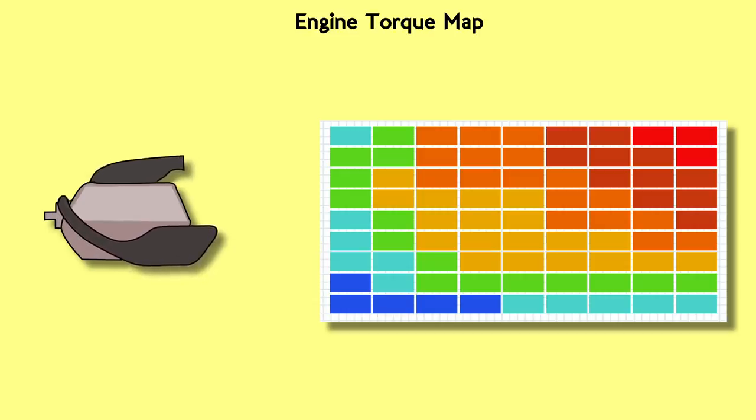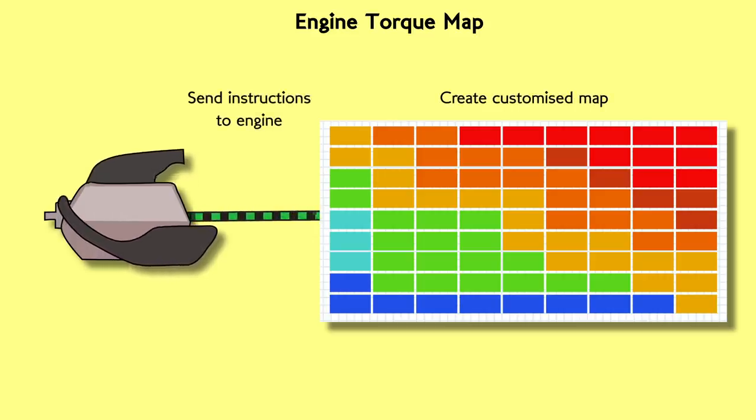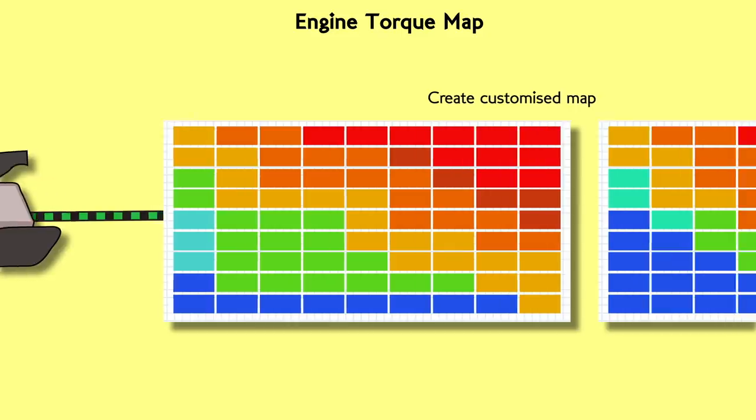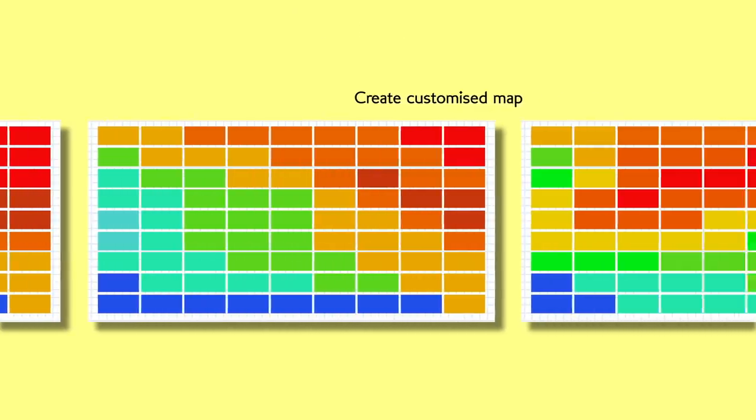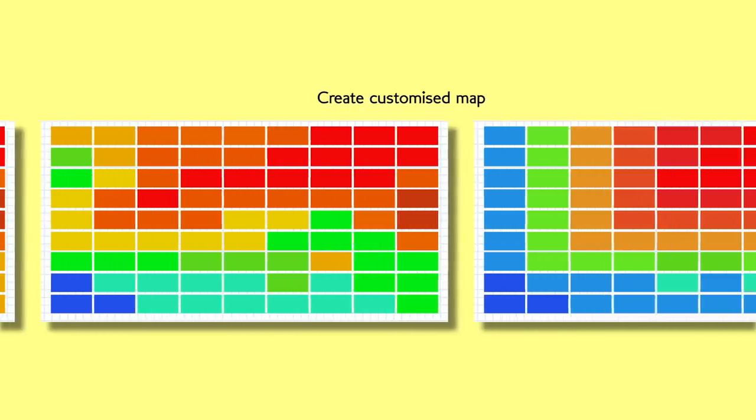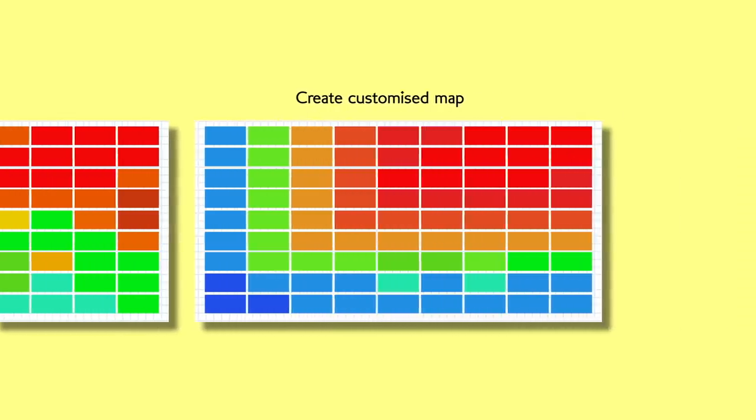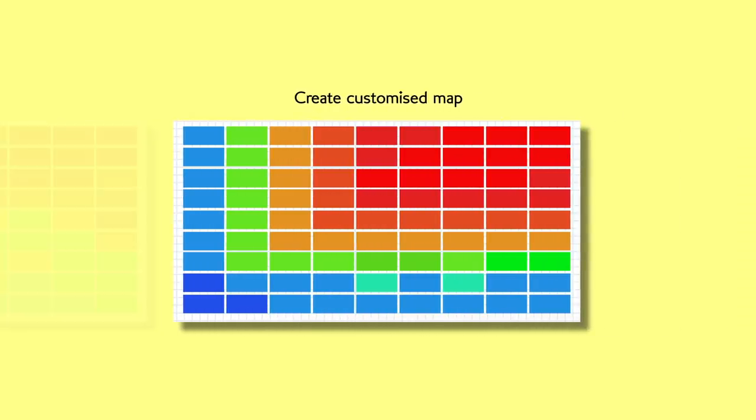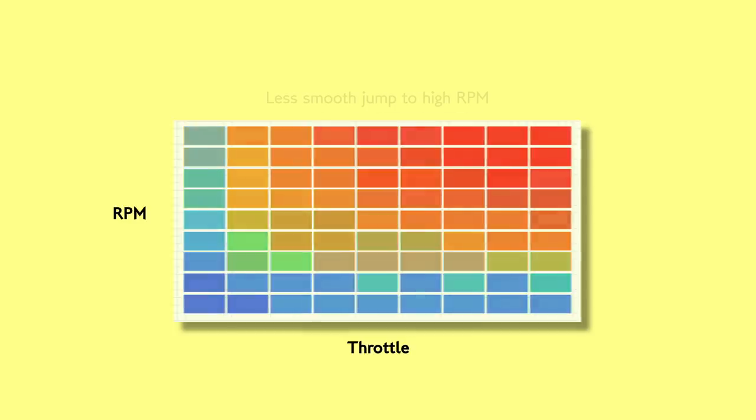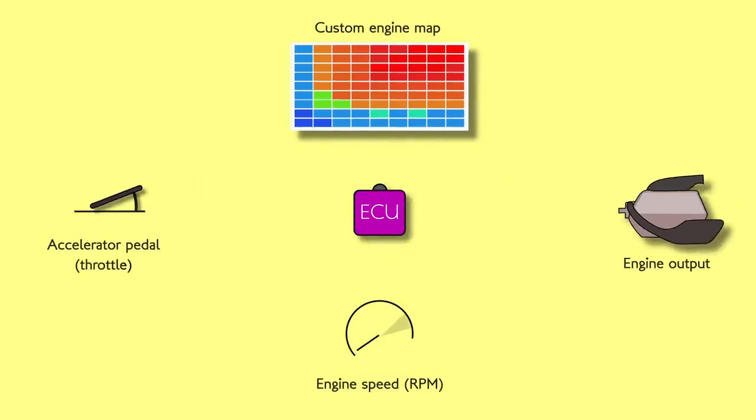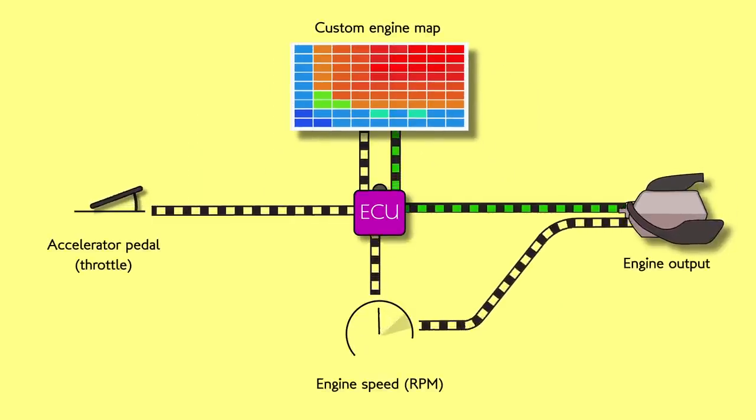But what if we wanted to create a map that did make it behave differently to normal? This is where our custom various engine mappings come in. We can create our own versions of this map so that when a driver pushes the accelerator pedal at a certain engine speed, the torque outputted will be different under different maps. For example, we might want to lower the torque at lower revs like this, or we may want to make the jump from low to high torque more dramatic.